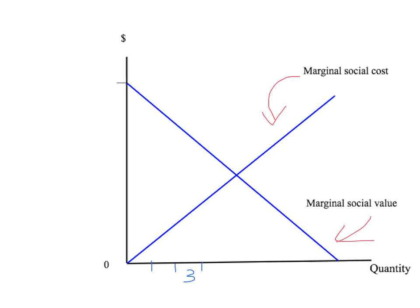If that third unit of production is produced and consumed, what is the gain to society? The total gain to society is going to be given by the area under our marginal social value curve — the shaded area — which tells us the total social value generated by that third unit. But we can't stop there because that third unit also costs something, and we have to subtract the costs of producing it. The total social cost of producing that marginal unit is the area under our marginal social cost curve.